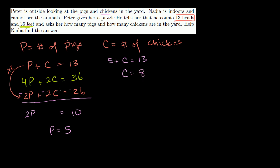If this approach confuses you, you might want to try substitution instead. There are many videos on solving systems of equations that go into more detail. Either way, the answer is 5 pigs and 8 chickens. Let's verify: 5 + 8 = 13 heads, and 5 × 4 = 20 pig feet plus 8 × 2 = 16 chicken feet gives 36 total feet. It works out.